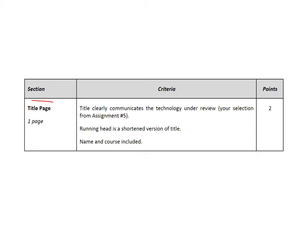The very first section of the rubric addresses your title page. You are expected to use APA formatting in the areas identified to develop your research paper. The title of your project needs to clearly communicate the technology that you have reviewed. You need to include a running head, your name, and the course on the title page. The rubric also provides information about the number of points overall that each section is worth when being evaluated.